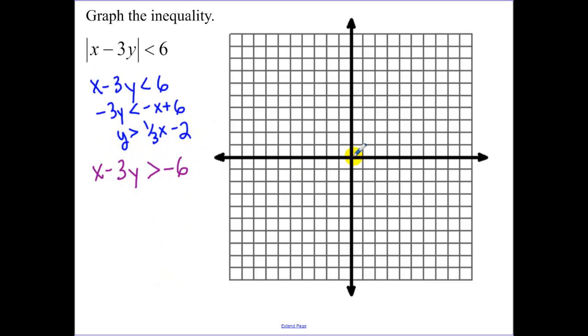So now I graph this equation. It's a dashed line. For this one, we're going to be shading above. Now, our second one. I'm going to solve for y, so I'm going to subtract the x over. I'm going to divide by a negative and switch my sign. It's going to be a positive one-third x plus a 2. So it looks like our lines are parallel.